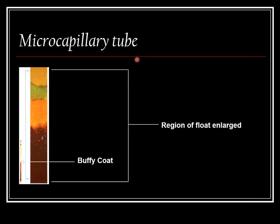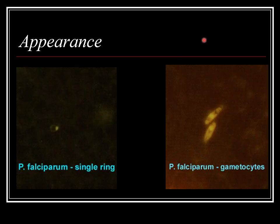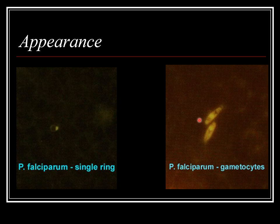Here we can see the microcapillary tube with the region of the float enlarged. After centrifugation, beneath the buffy coat layer, the parasitized RBC layer is visible. Under fluorescent microscope, when we focus on the area containing parasitized RBCs, we can see the Plasmodium parasite. The ring form appears in apple green color, and these are gametocytes of Plasmodium falciparum — a single ring form and gametocytes are visible.